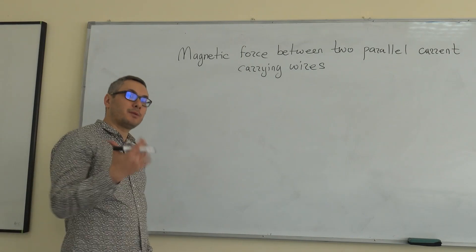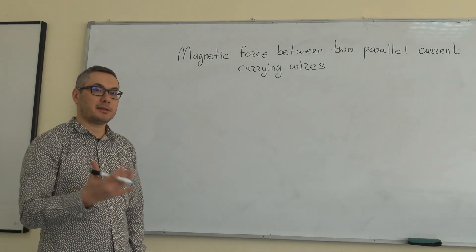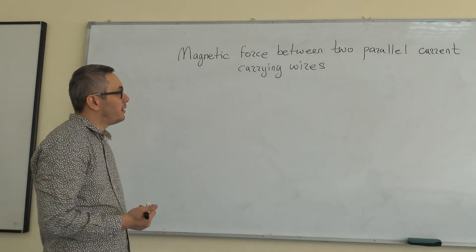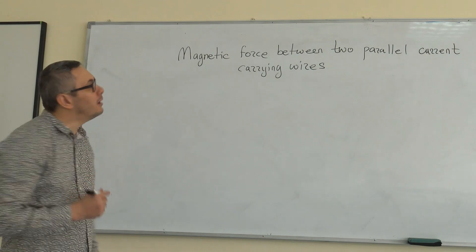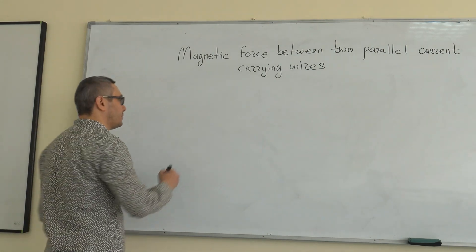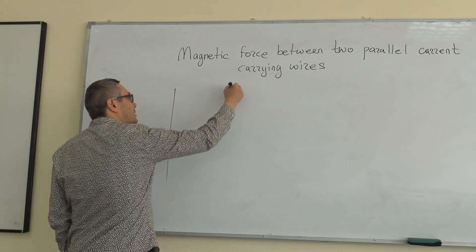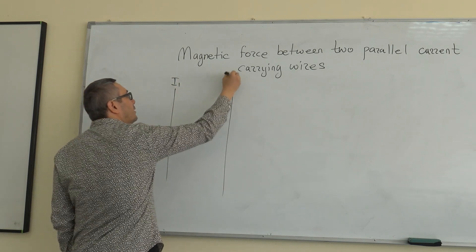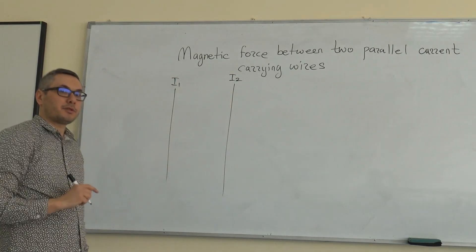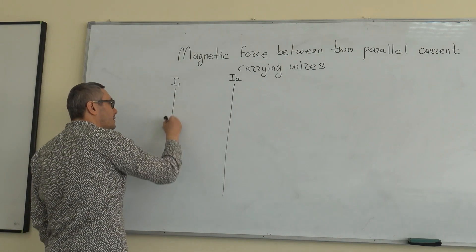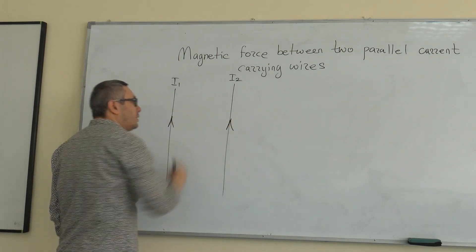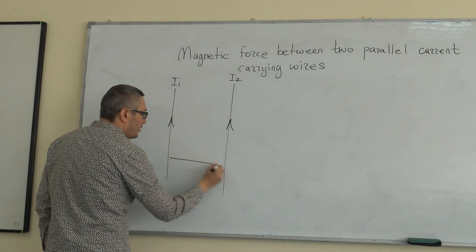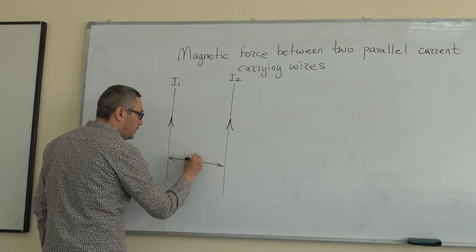We have seen that if you have a current carrying wire, it creates a magnetic field around itself, with the magnetic field lines being concentric circles. Now what happens if you have two parallel current carrying wires next to each other? Let's say I have two currents parallel to each other, I1 and I2, and let's first say that the two currents are carrying current in the same direction — both of them are pointing up. The distance between them is equal to d.